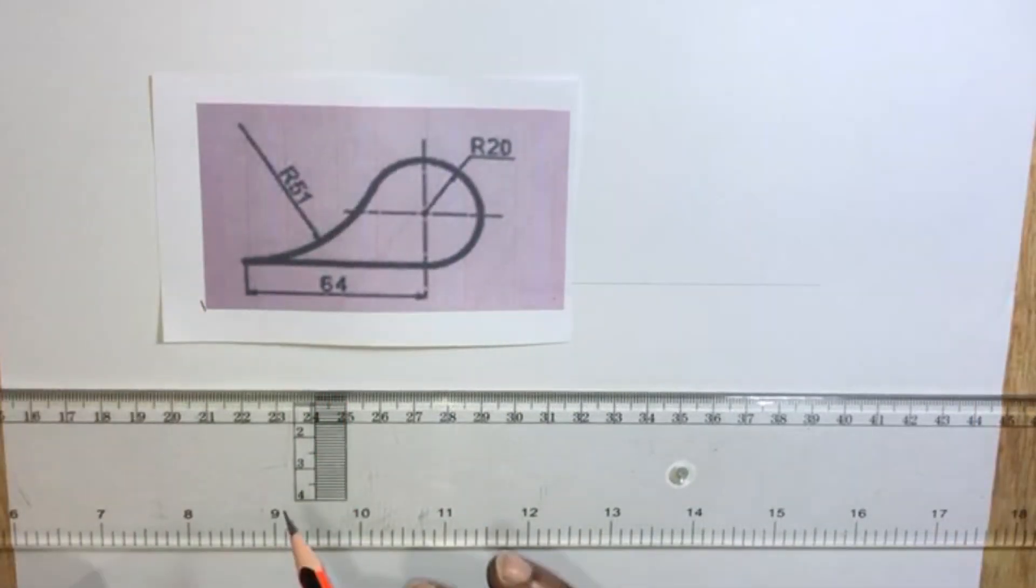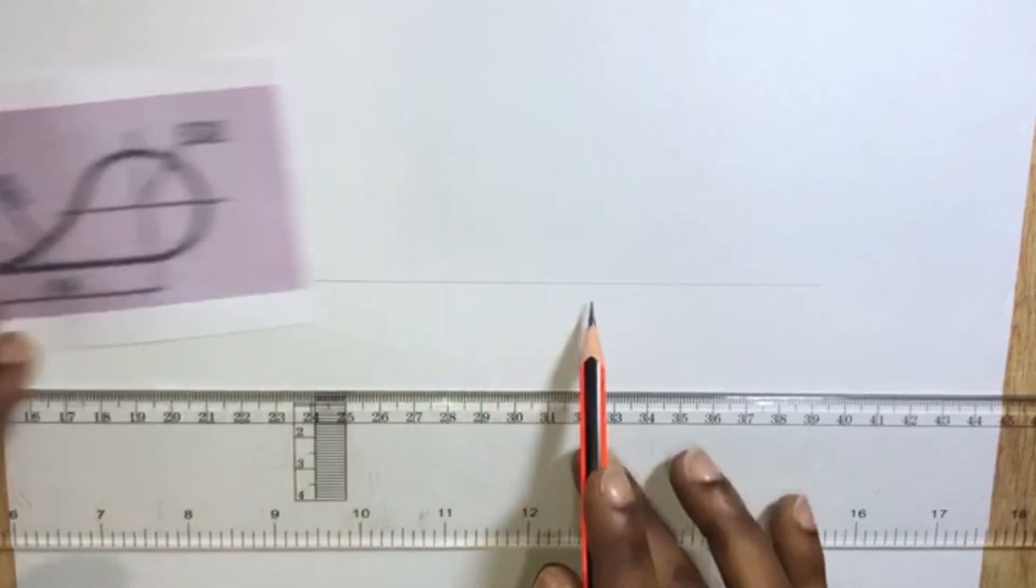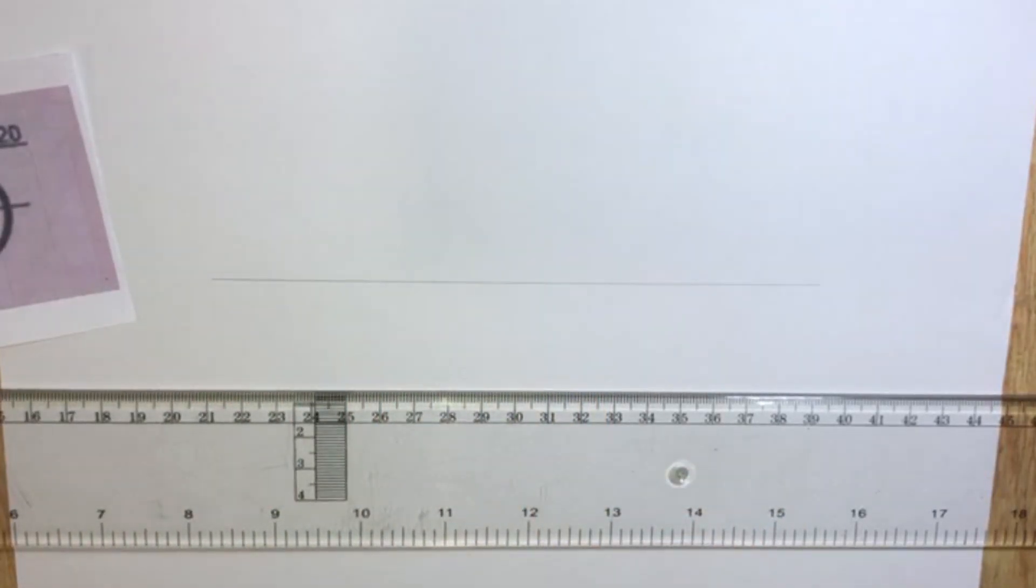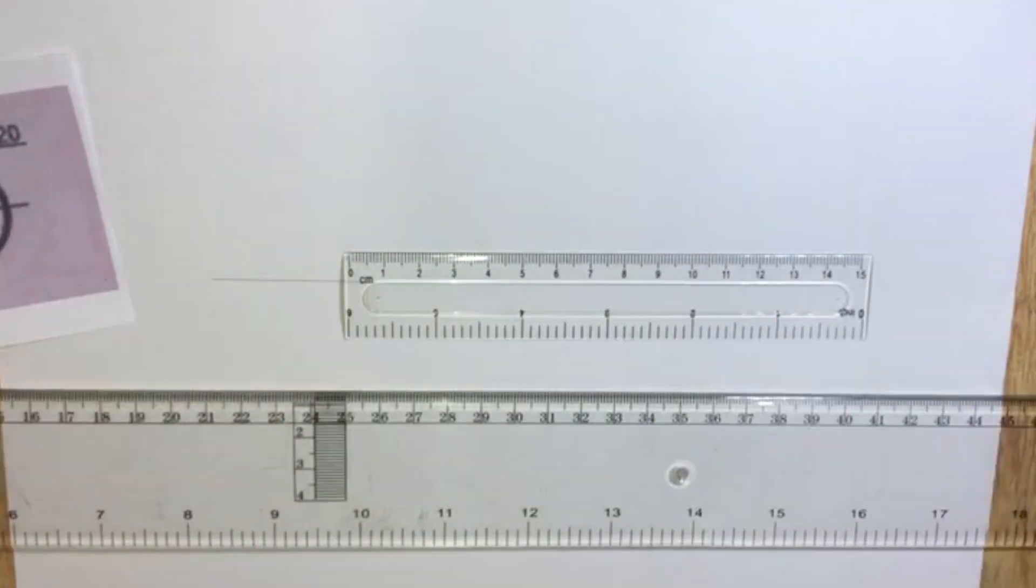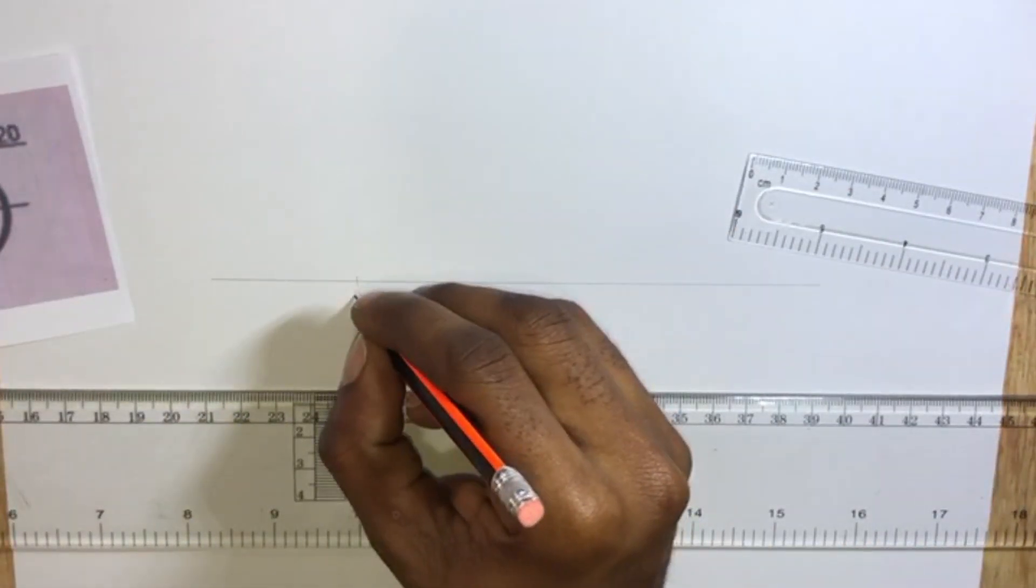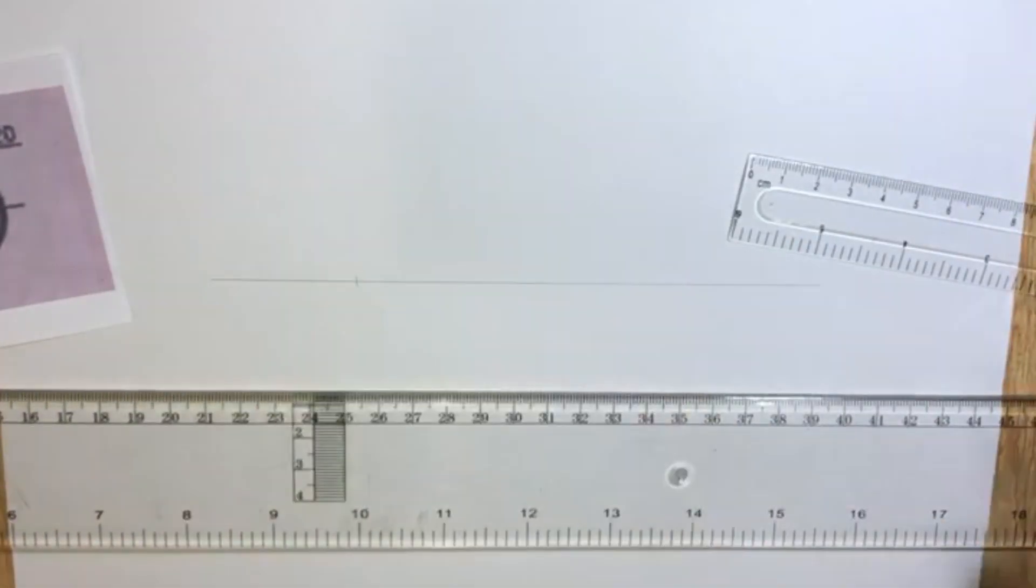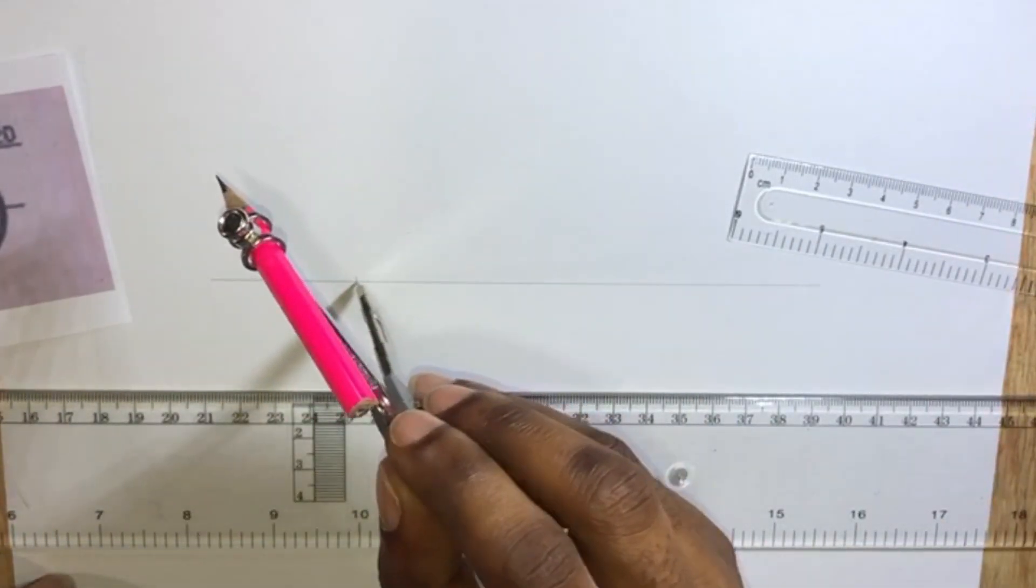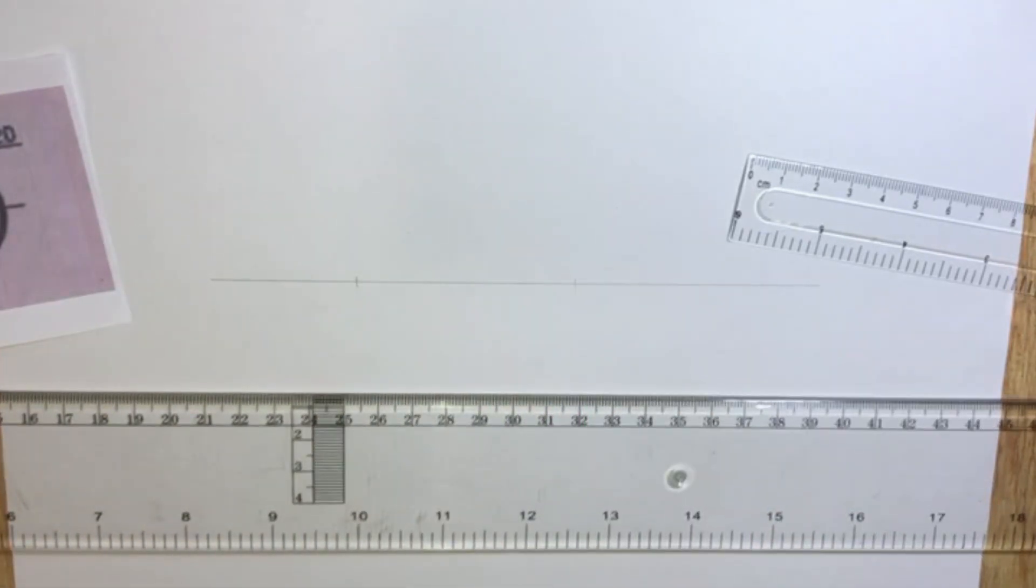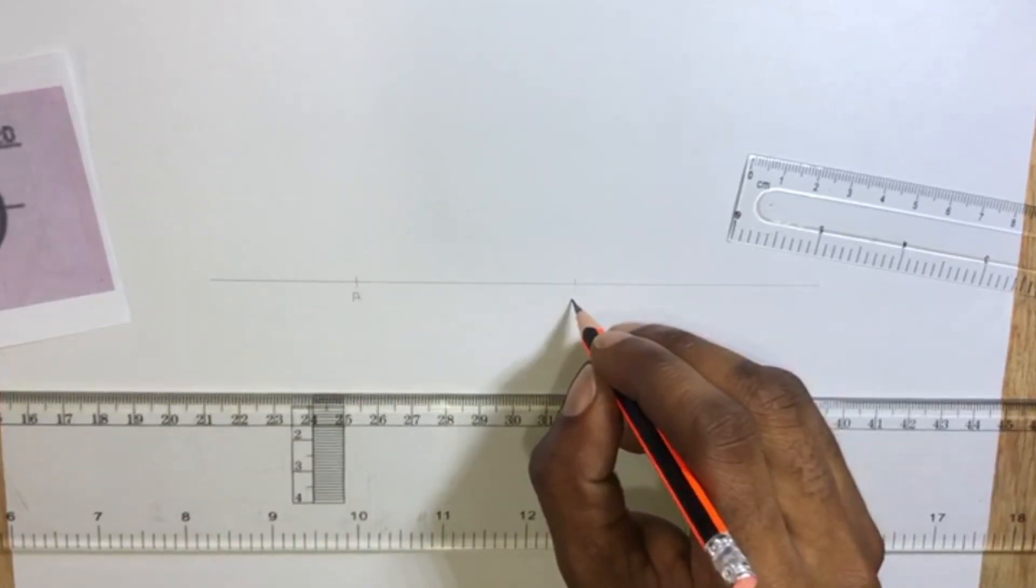We are going to measure 64 millimeters and transfer this reading on our horizontal baseline. For the purpose of you following what I'm doing in this video, I'm going to call this point A and this point B.